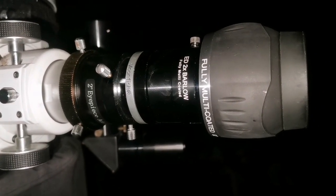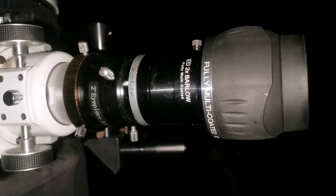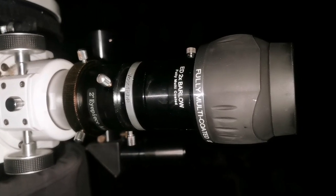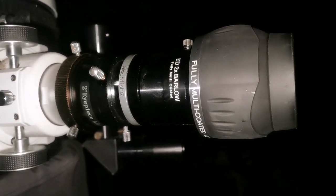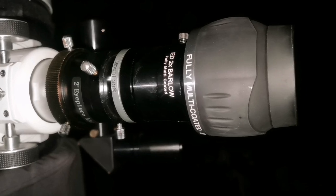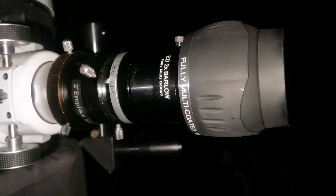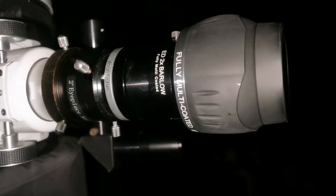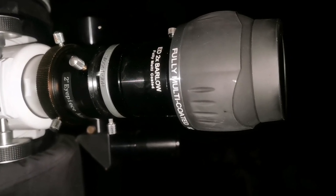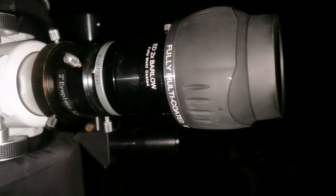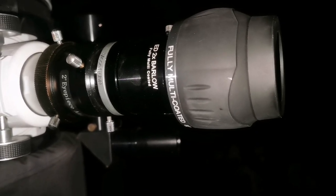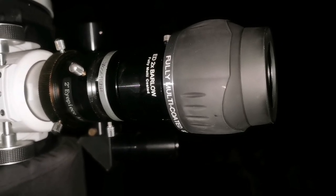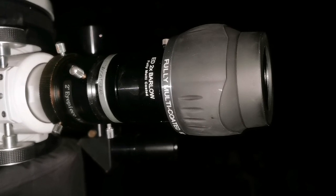I'm now using the 2x Barlow, a Moonfish Barlow of very good quality, with a Maxvision 24 millimeter 82 degrees eyepiece. The galaxy M109 near Gamma Ursa Major, Fecat, is quite visible, easy to see, and responds well to the borrowing.